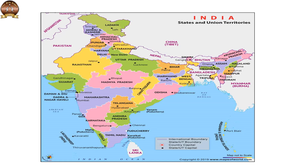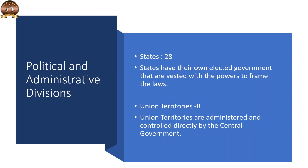On the political map of India, we can see the 28 states and 8 union territories. Political and administrative divisions. As India is a vast country, for administrative purposes, the country is divided into 28 states and 8 union territories.